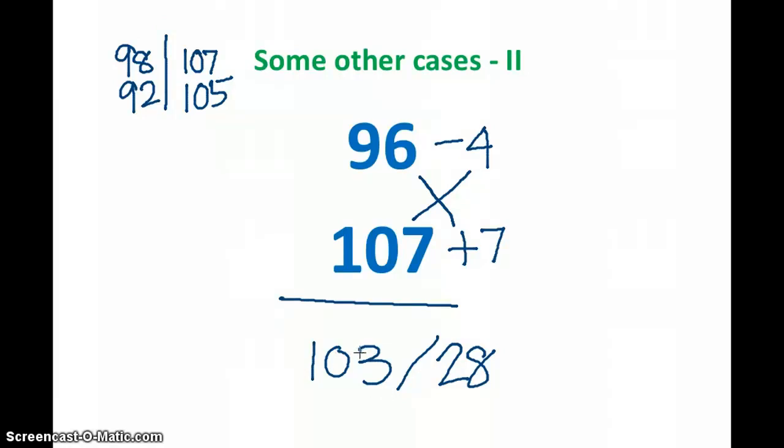We want the complement of 28. That means if I subtract 28 from 100, how much will it come to? 72, of course it will come to 72. And I decrease 1 from this number, so that means this is 10272 is the answer.